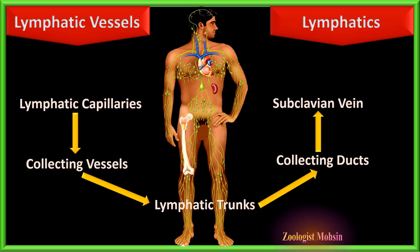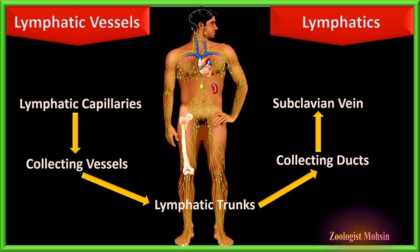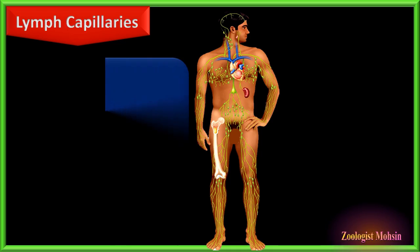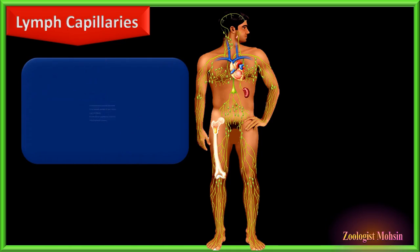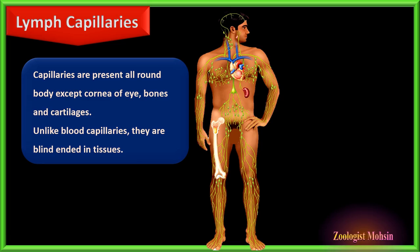This circulation ensures the recycling of fluid from tissue to blood and from blood to tissue fluid, performing check and balance of body fluid. Lymphatic vessels begin from lymphatic capillaries, which are present in every part of the body except the cornea of the eye, bone cartilage, and bone marrow.